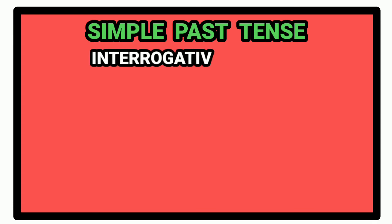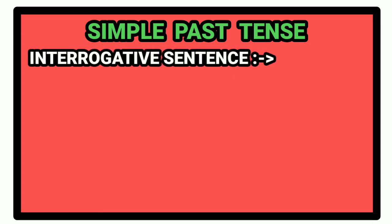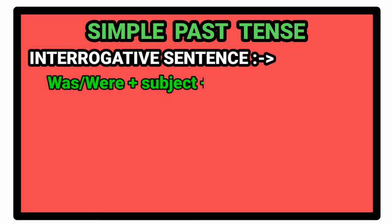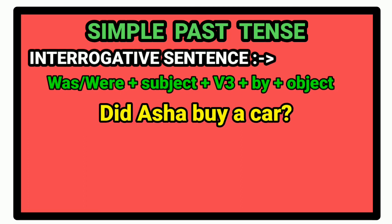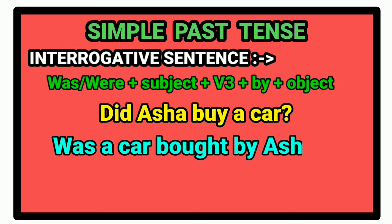Now, the rule for interrogative sentence in simple past tense. For interrogative sentence, first of all, we write auxiliary verb was or were. After that, we write subject. Then the past participle form of the verb. After that, we write the preposition by. Then we write the object. And in the end, we write the question mark. For example, did Asha buy a car? Passive voice will be: was a car bought by Asha?